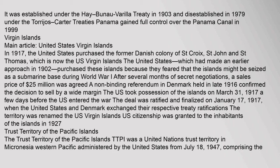Virgin Islands: In 1917, the United States purchased the former Danish colony of St. Croix, St. John, and St. Thomas — now the U.S. Virgin Islands. The U.S. had made an earlier approach in 1902 and purchased these islands fearing they might be seized as a submarine base during World War I. After several months of secret negotiations, a sales price of $25 million was agreed. A non-binding referendum in Denmark in late 1916 confirmed the decision to sell by a wide margin. The U.S. took possession on March 31, 1917. The deal was ratified on January 17, 1917. U.S. citizenship was granted to the inhabitants in 1927.